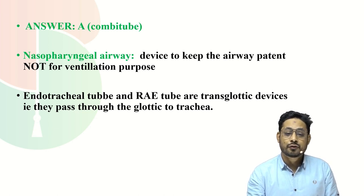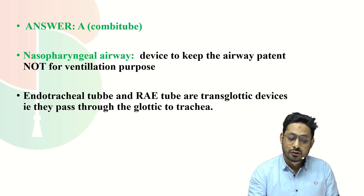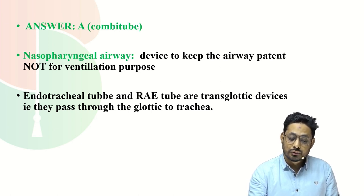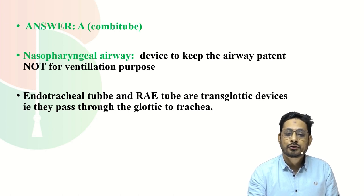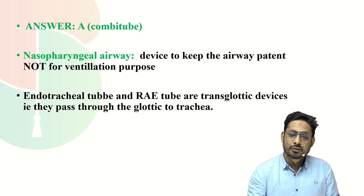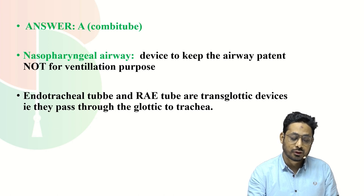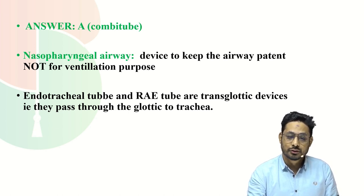The next option was nasopharyngeal airway. Supraglottic devices are used to ventilate the patient, but the nasopharyngeal airway is never used to ventilate the patient. These devices are used to keep the airway patent, not for ventilation purposes, so it is also excluded. A right-angle endotracheal tube is also a type of endotracheal tube placed below the level of the vocal cord, so it is not a supraglottic device and is also excluded.